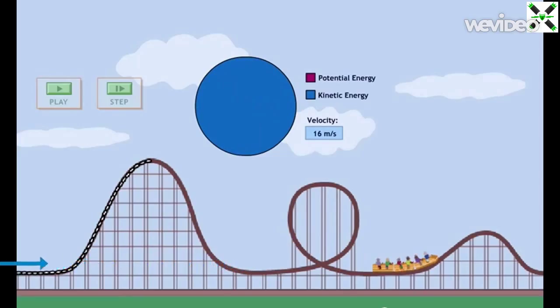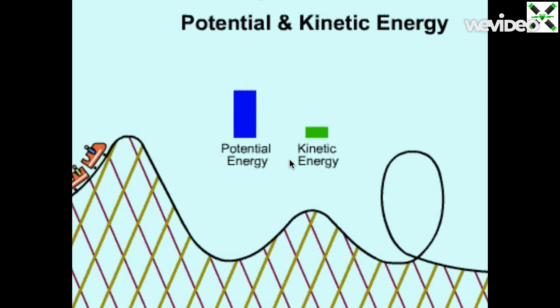And therefore the rollercoaster has 100% kinetic and 0% potential. So the more kinetic energy an object has, the less potential energy it has, and vice versa.